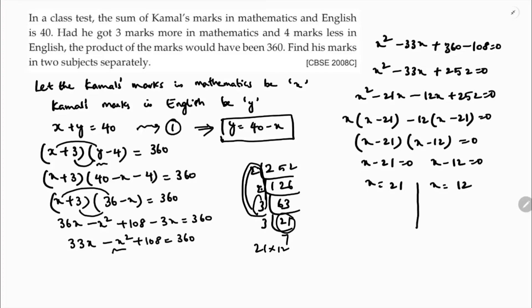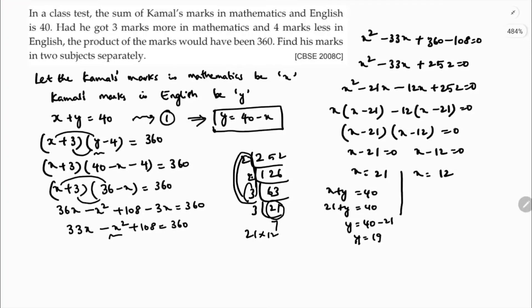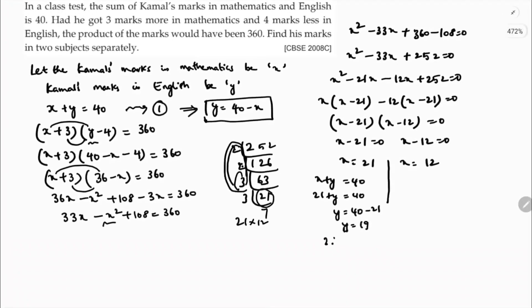Both values are positive. If x is 21, then x plus y equals 40, so 21 plus y is 40. So y is 40 minus 21, which is 19. The marks in mathematics will be 21 and in English 19.